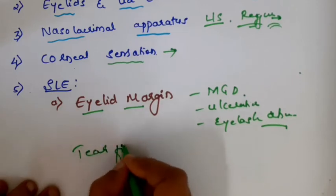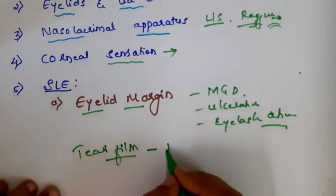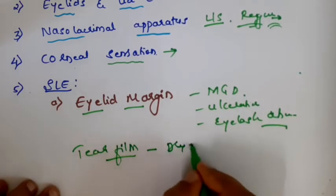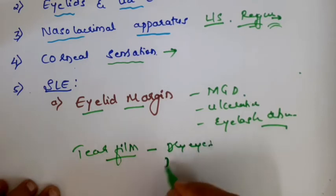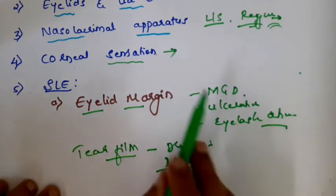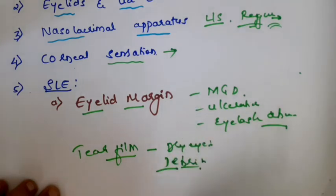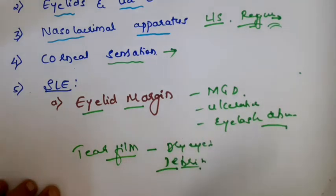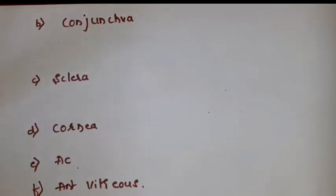Before going to the conjunctiva, carefully examine the tear film. The patient may be suffering from dry eye, or there could be some debris in the tear film which can be the cause for the corneal ulcer. By all this examination you are finding out the possible cause for the corneal ulcer, thereby making treatment easier.